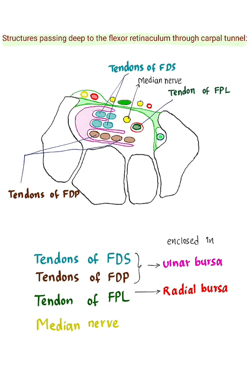Tendons of flexor digitorum superficialis and tendons of flexor digitorum profundus are enclosed in a synovial sheath called the ulnar bursa. The tendon of flexor pollicis longus is enclosed in a synovial sheath called the radial bursa.